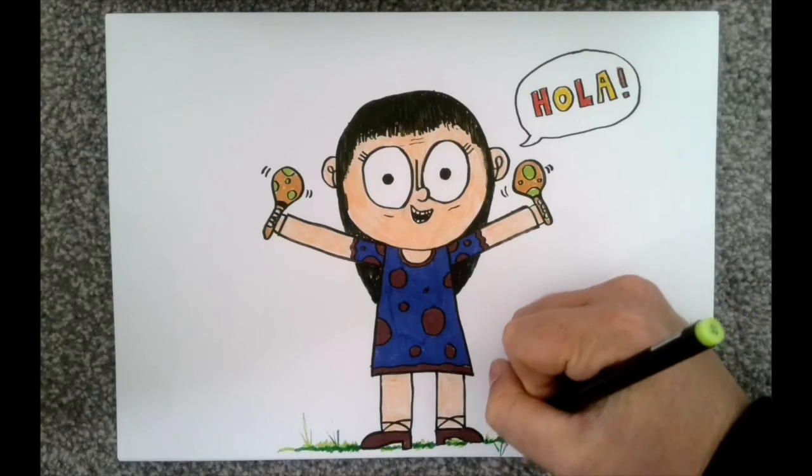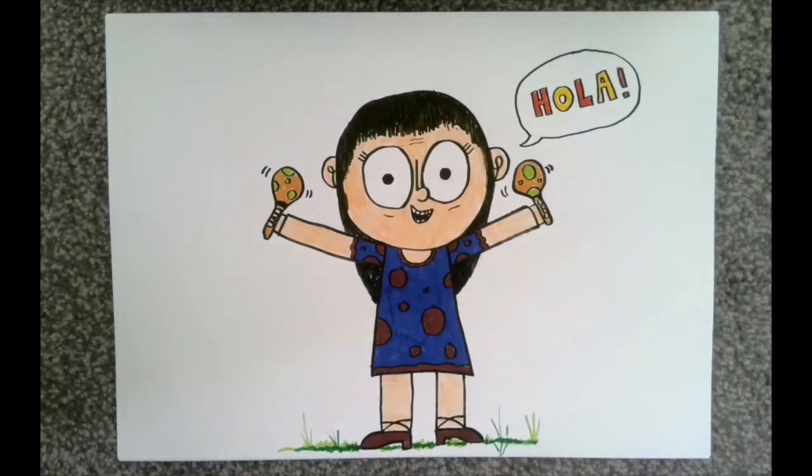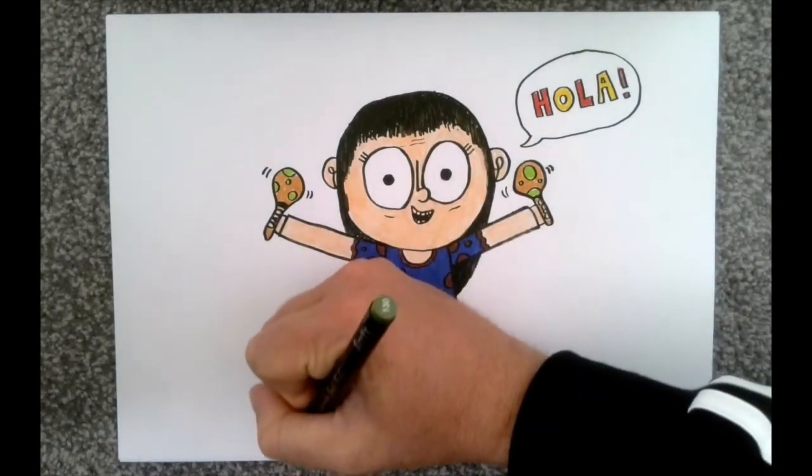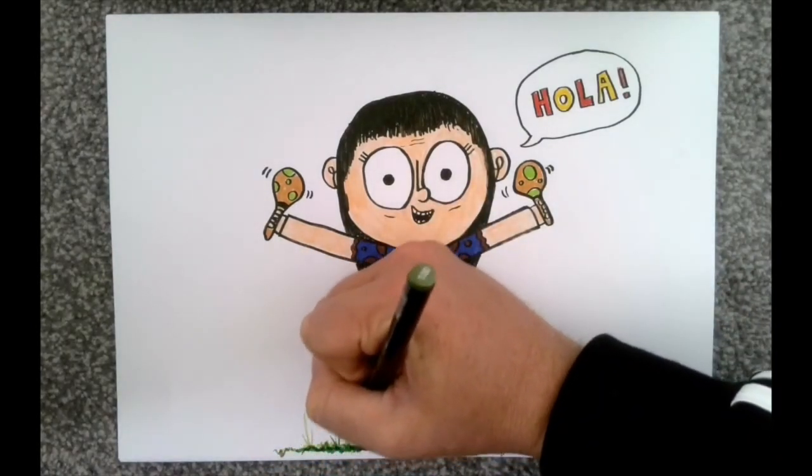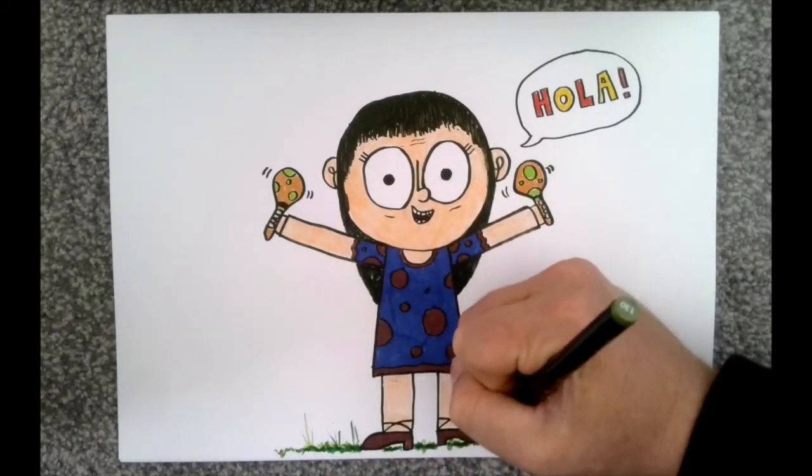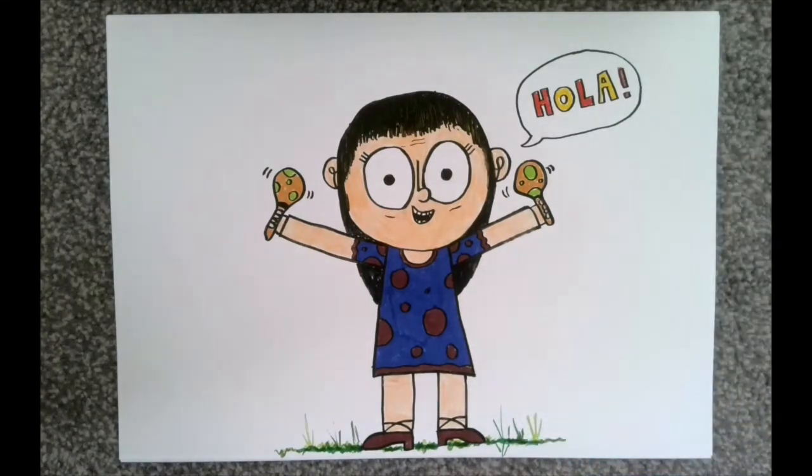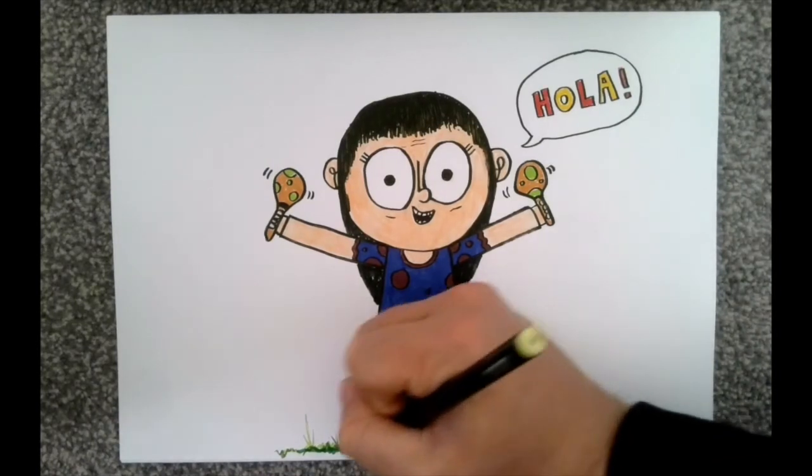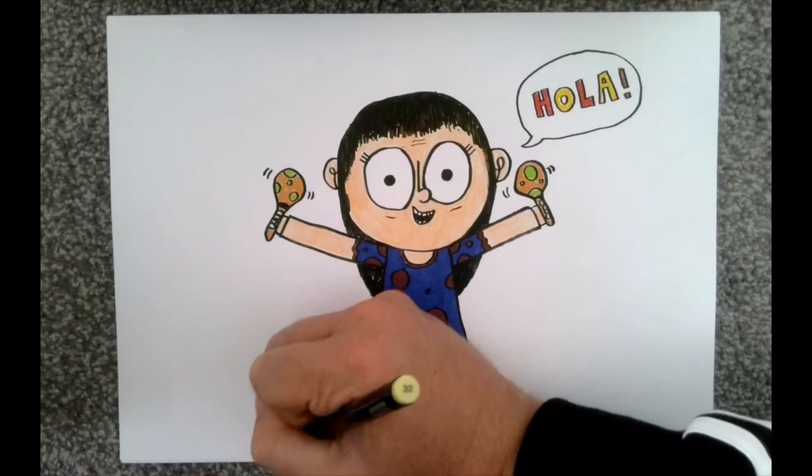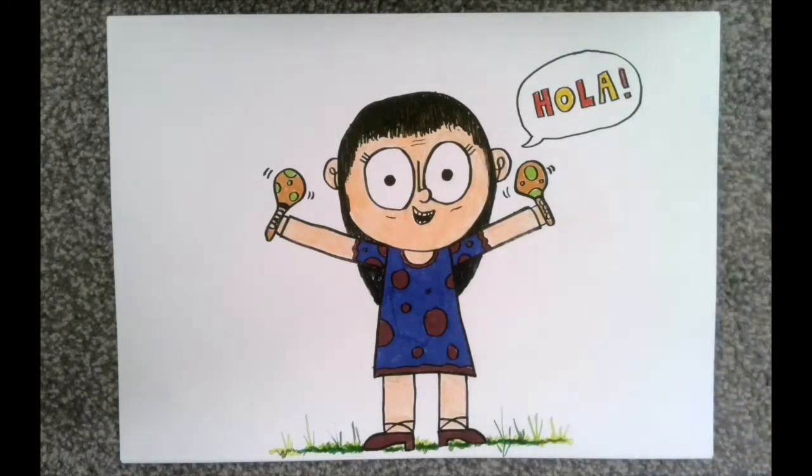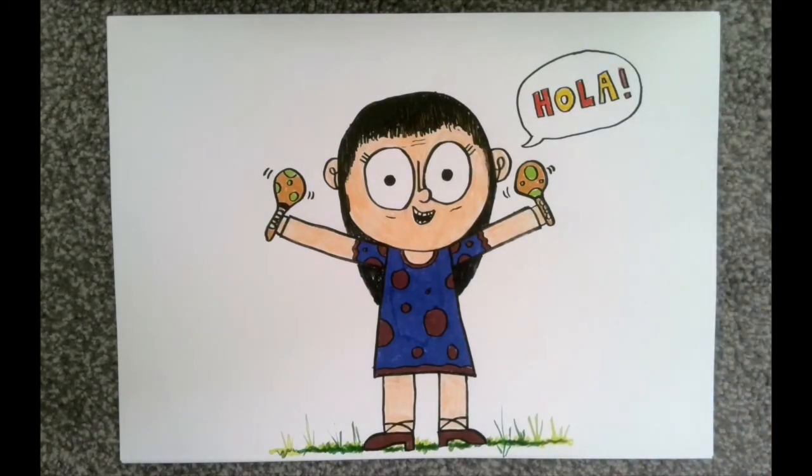Slightly darker one here. And then we're almost finished. I like this green. It's almost a yellowy kind of green, isn't it? It really does complement the yellow greens. There we are. So we have our grass, we've got Mrs Mitchell, we've got some maracas, we've got some Spanish. Absolutely fantastic.